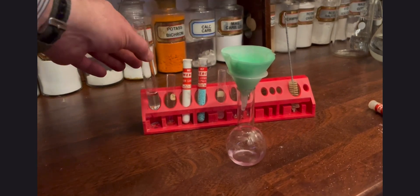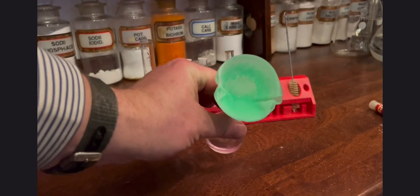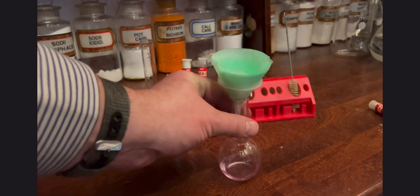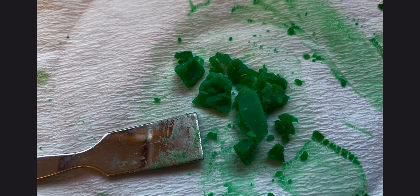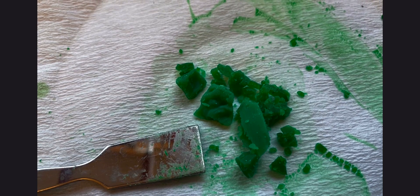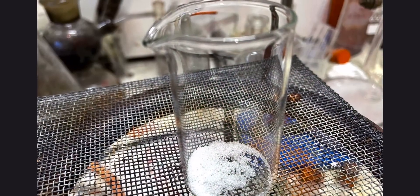Then we can filter that off using the little filter funnel and the tiny little Florence flask that Merritt provide us with. We'll dry that out eventually onto some filter paper and we should be left with some nickel carbonate.